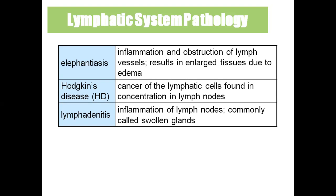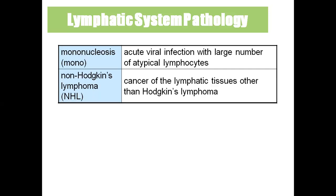Lymphadenitis is inflammation of lymph nodes, commonly called swollen glands. Mononucleosis is an acute viral infection with a large number of atypical lymphocytes. Non-Hodgkin's lymphoma is cancer of the lymphatic tissue other than Hodgkin's lymphoma.